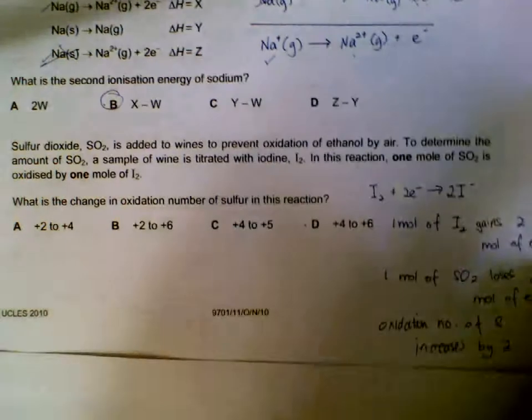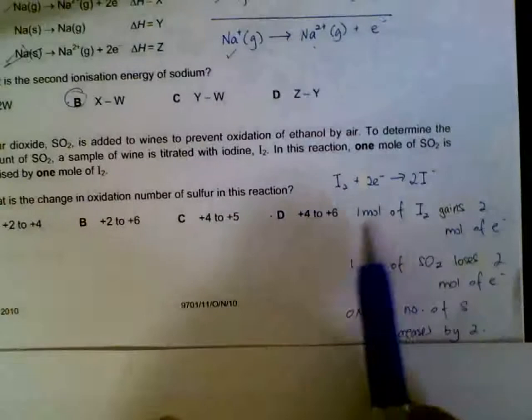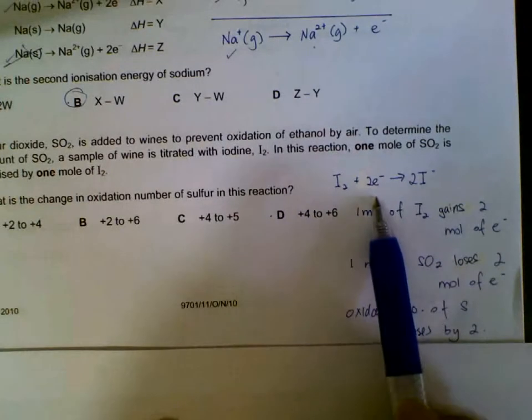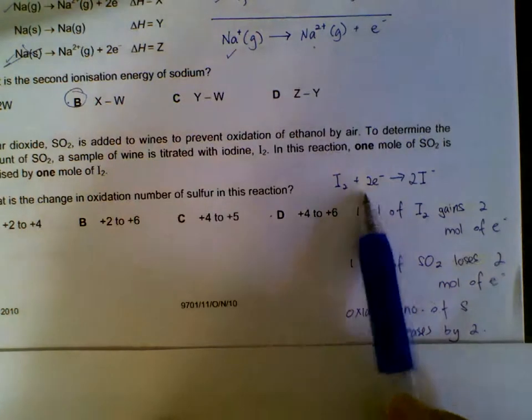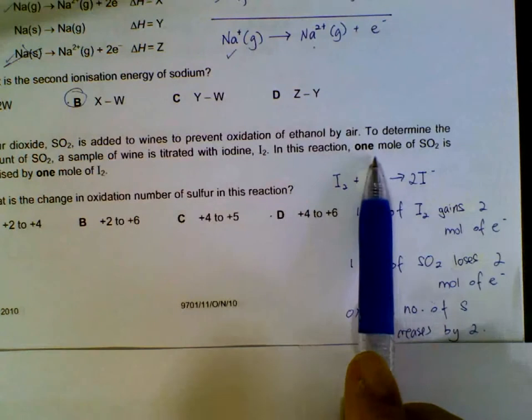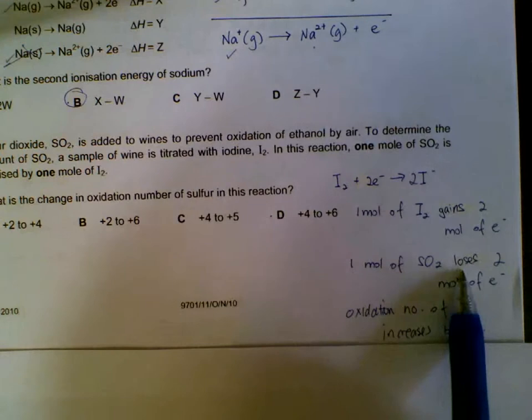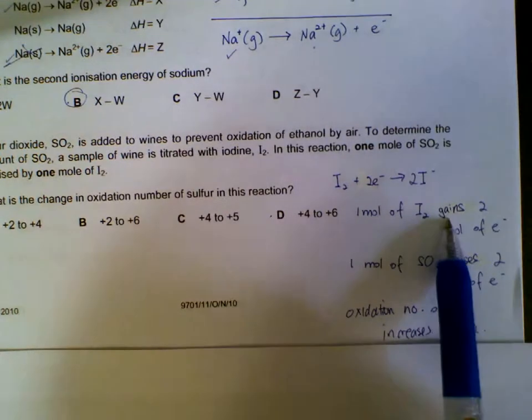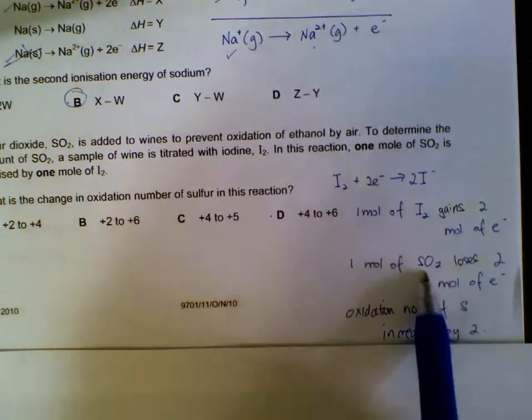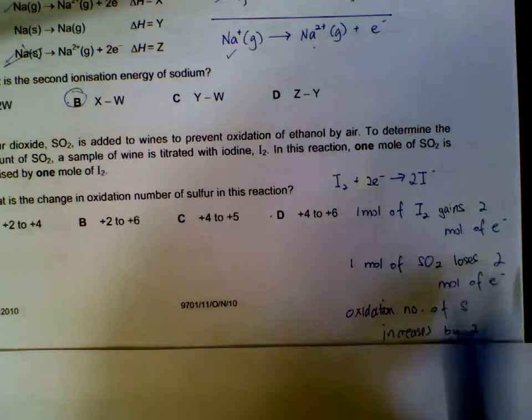Two electrons are involved per mole of iodine. So I write out the statement: one mole of iodine will gain two moles of electrons. Where does this two moles of electrons go to? It will go to the one mole of sulfur dioxide. Or where does this electron come from? It will come from sulfur dioxide.